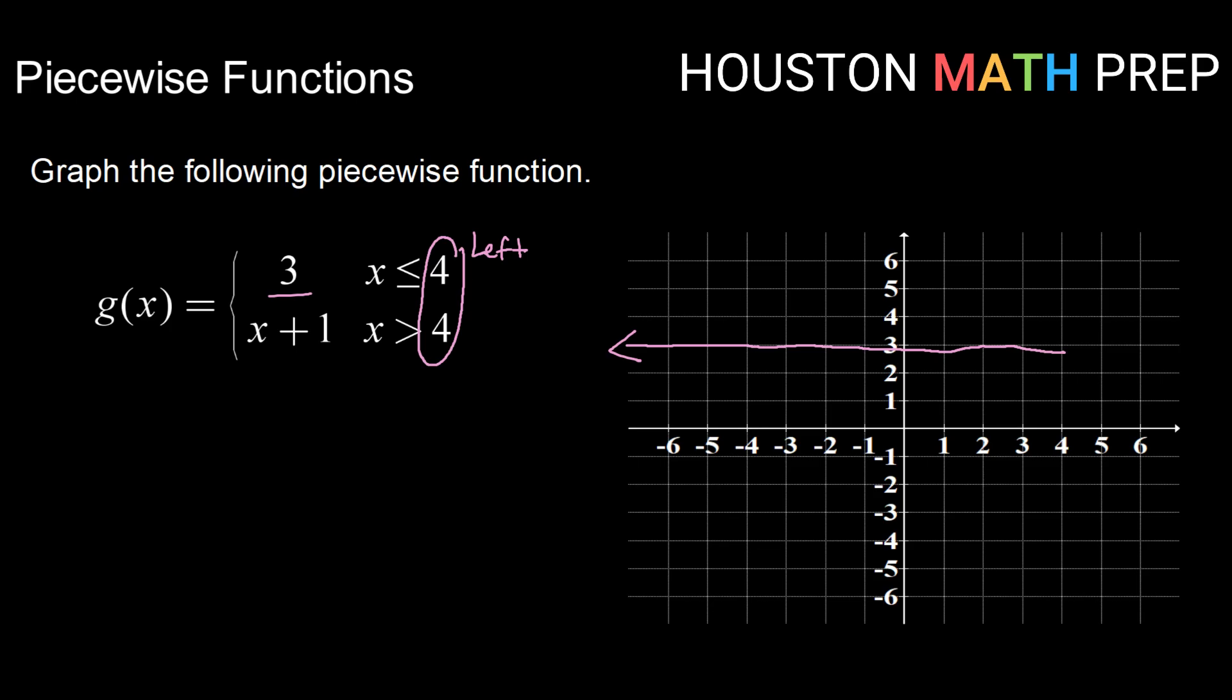Because g of x equals three has the or equal to piece, I'm going to go ahead and put a closed dot there. So I'm going to fill in and say my y value at four is three. Okay, so that is one piece.